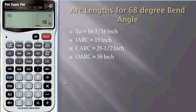To find the other types of arc lengths, press Angle of Slope once again so that inner arc length will be 19 inches. Press one more Angle of Slope, center arc is 28 and 1/2 inch. Press one more Angle of Slope, outer arc is 38 inches.